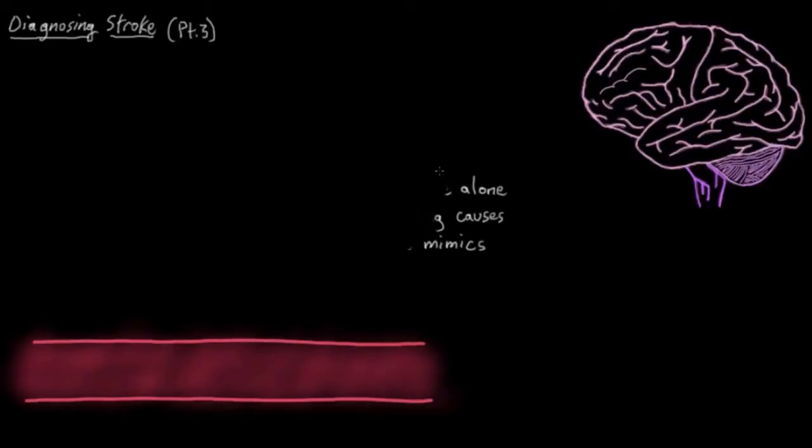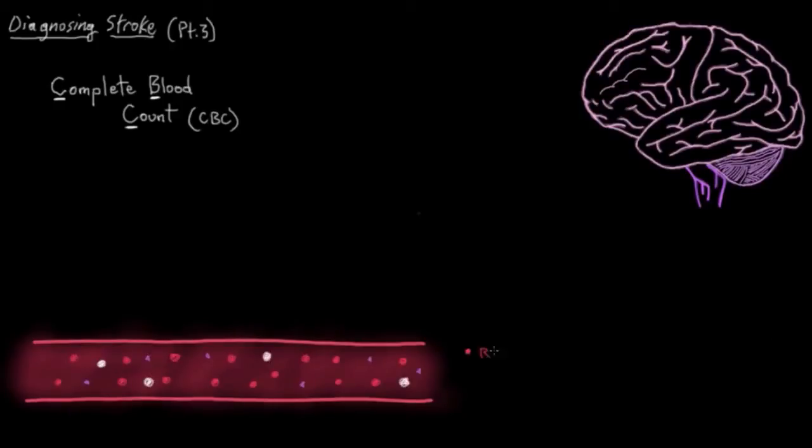What sorts of blood tests are usually ordered? A complete blood count, or CBC, is one of them. This is a test to check that you have a normal amount of red blood cells, white blood cells, and platelets in your blood, because sometimes strokes can happen as a result of certain blood conditions.